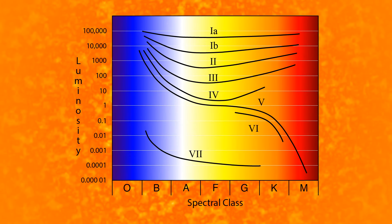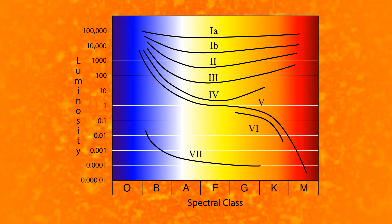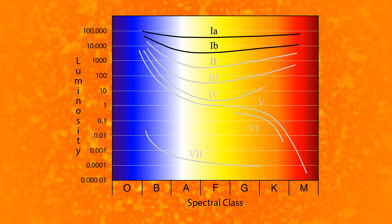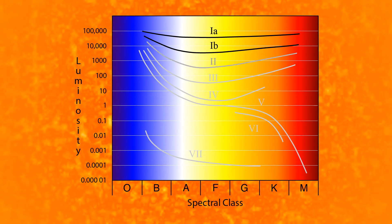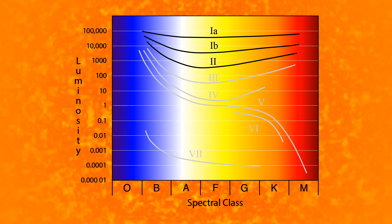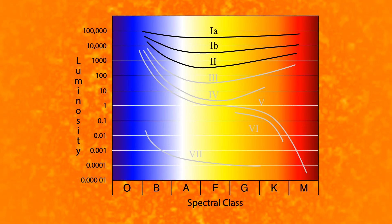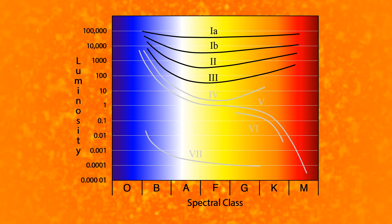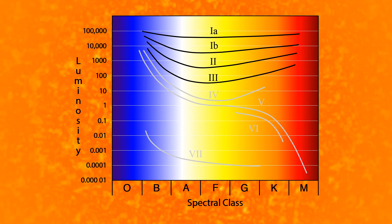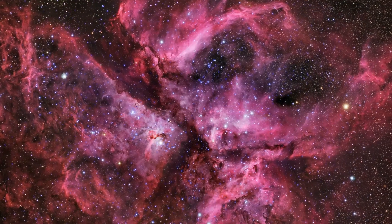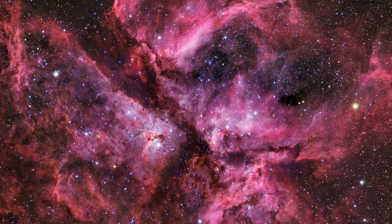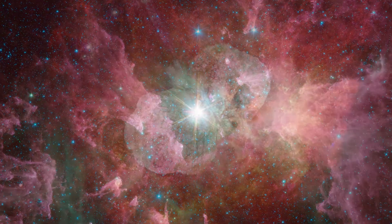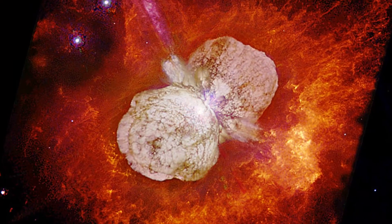The Roman numeral identifies what phase in the life cycle the star is in. Roman numeral I identifies supergiant stars. Numeral II identifies bright giant stars. Numeral III identifies giant stars. These stars are near the end of their lives. They have burned through all their hydrogen and were massive enough to burn helium into heavier elements.